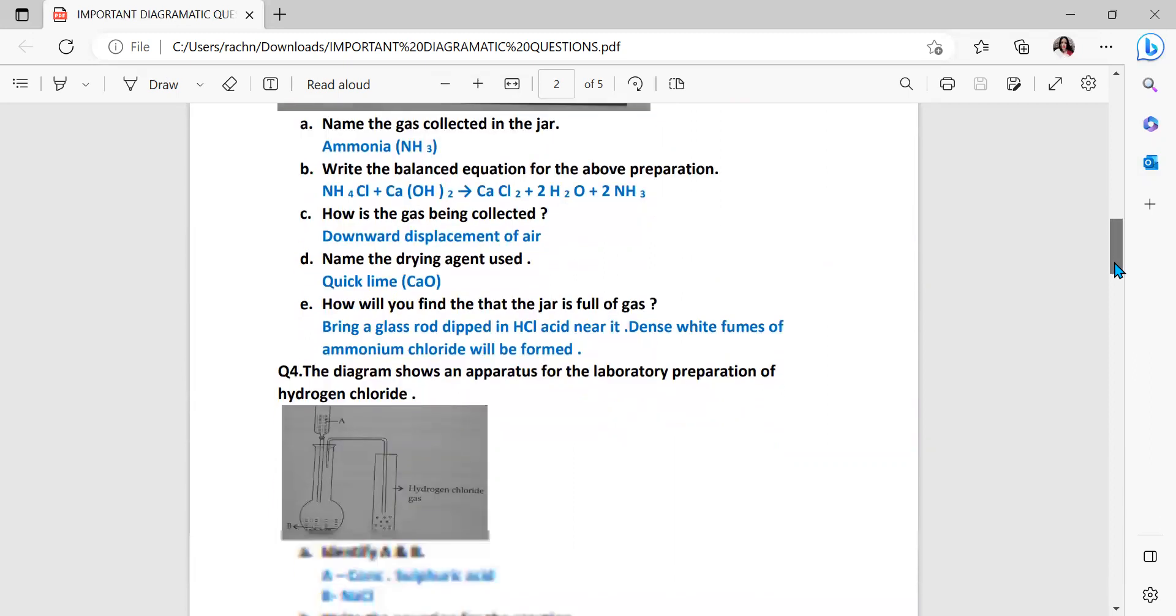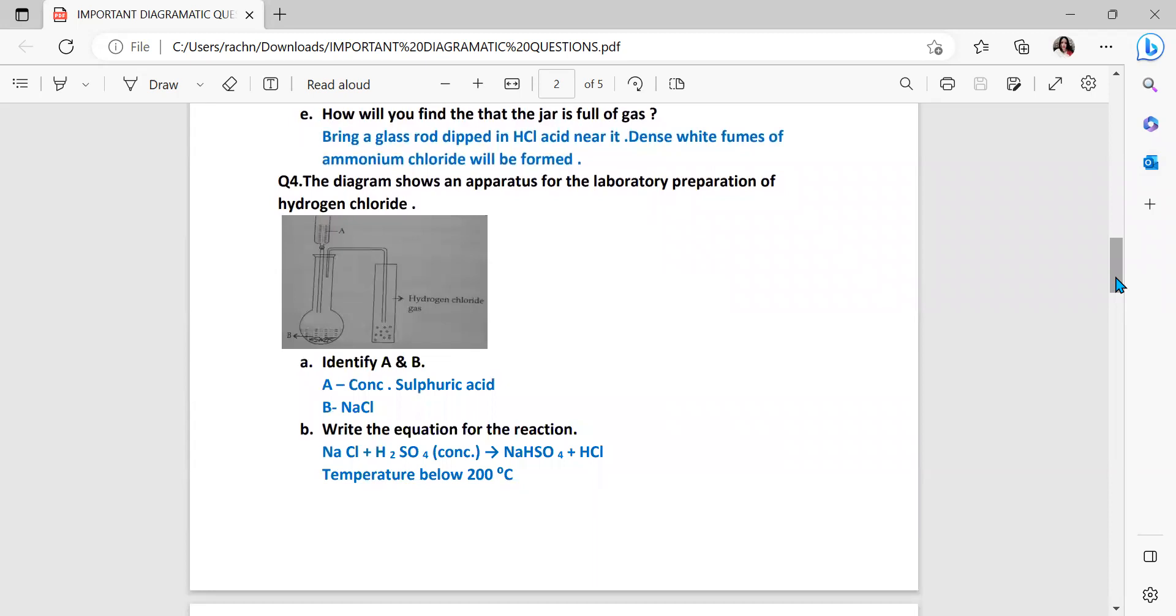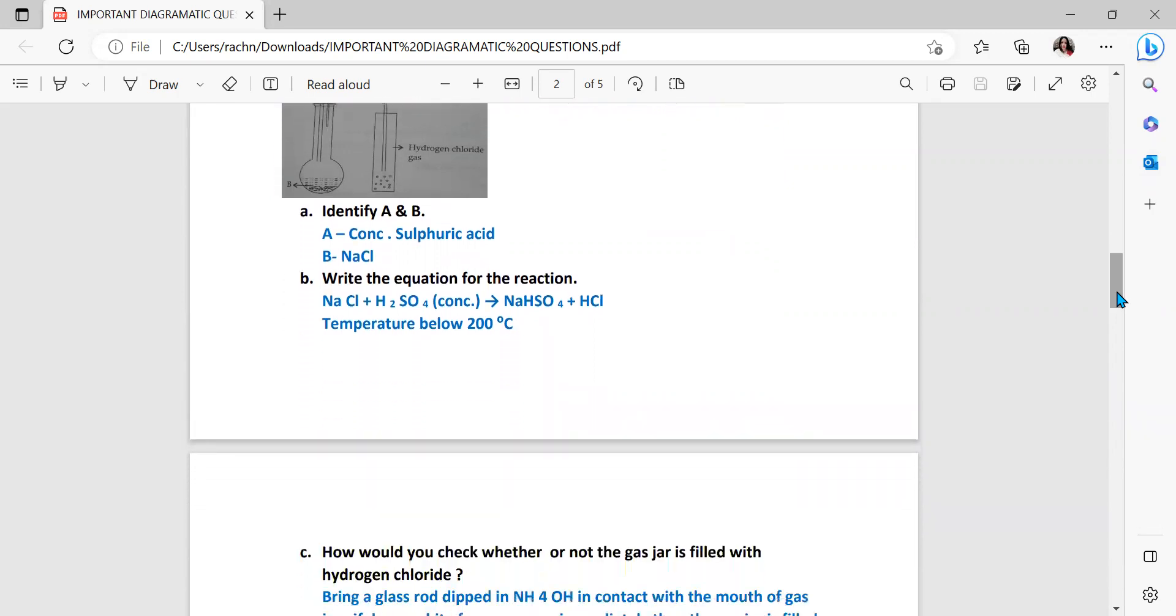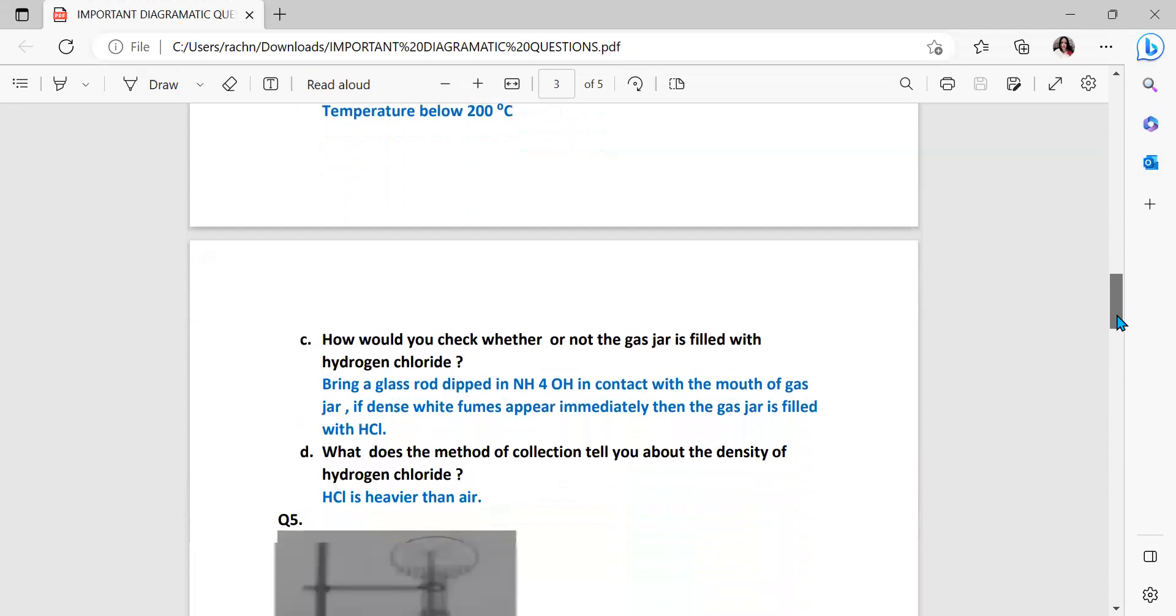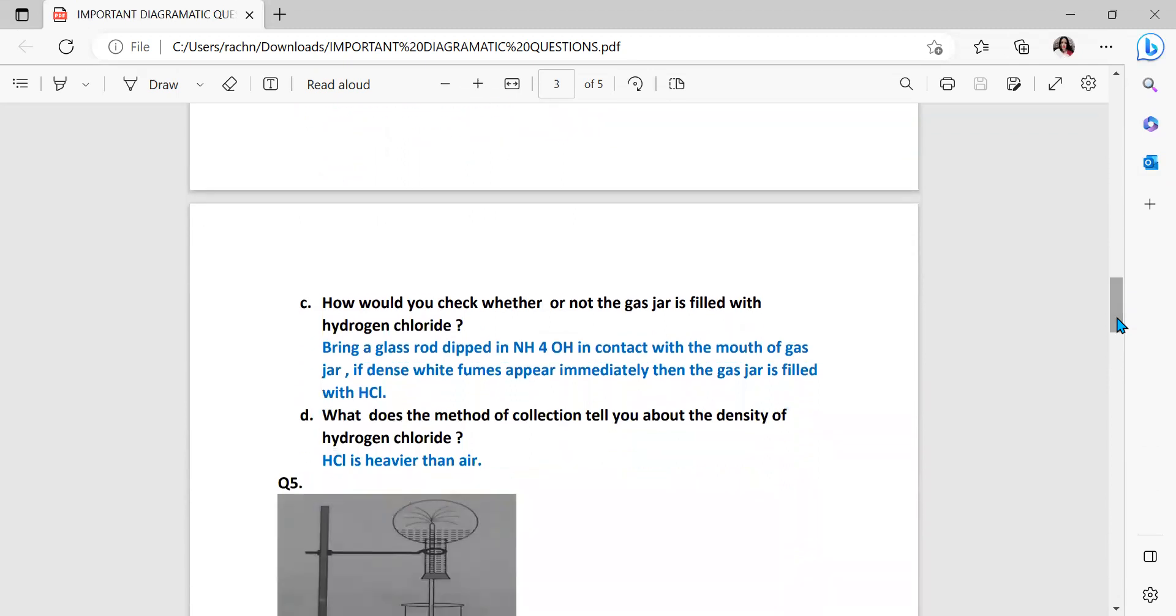Question number four. The diagram shows an apparatus for the lab preparation of hydrogen chloride. Identify A and B. Your A is concentrated sulfuric acid and B is NaCl. Write the equation for the reaction. Your equation is NaCl plus concentrated H2SO4 gives NaHSO4 plus HCl. Now here the temperature is very important because we are mentioning below 200 degree centigrade. If you will not mention the temperature you will not get any marks, because the moment the temperature rises above 200 degree centigrade it is Na2SO4 which is formed. Part C, how would you check whether or not the gas jar is filled with hydrogen chloride? Bring a glass rod dipped in NH4OH in contact with the mouth of gas jar. If dense white fumes appear immediately then the gas jar is filled with HCl. Again it is the chemical test. What does the method of collection tell you about the density of hydrogen chloride gas? HCl is heavier than air.